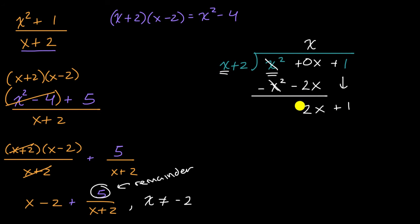X goes into negative two x, negative two times. Put that in the constant column. Negative two times two is negative four. And then negative two times x is negative two x.